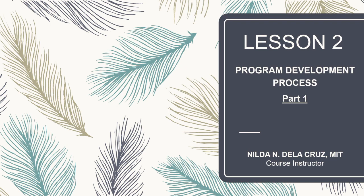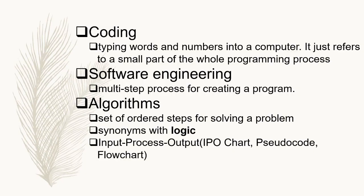In this lesson, we're going to discuss the program development process. This is Lesson 2, Part 1. You might think that programming simply involves typing words and numbers into a computer. Actually, this activity is called coding, which refers to only a small part of the whole programming process. Programming is also called software engineering, which is a multi-step process for creating a program.